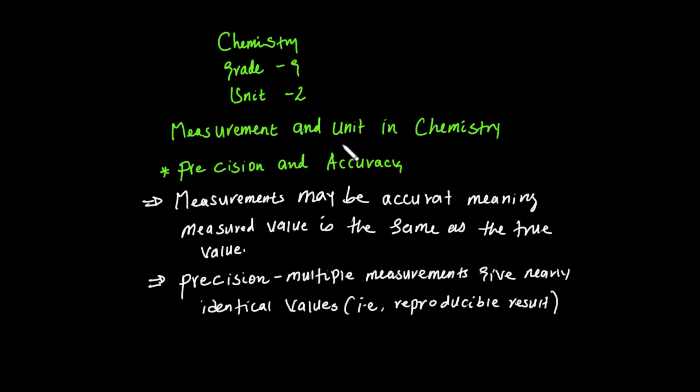Random uncertainty, on the other hand, can be reduced but not fully eliminated. We can reduce the error, or the uncertainty. Good — let's come to today's lesson.